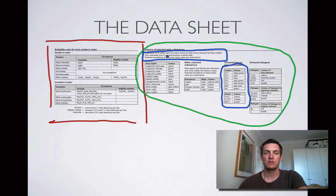Two colourless ions in general produce a white solid, and the selected exceptions to these two basic rules are noted here. So it's not good enough just to read what's in the tables — it's also important to read what's around them.